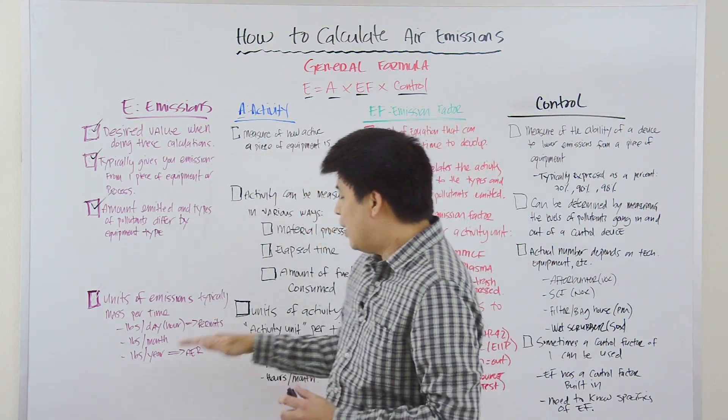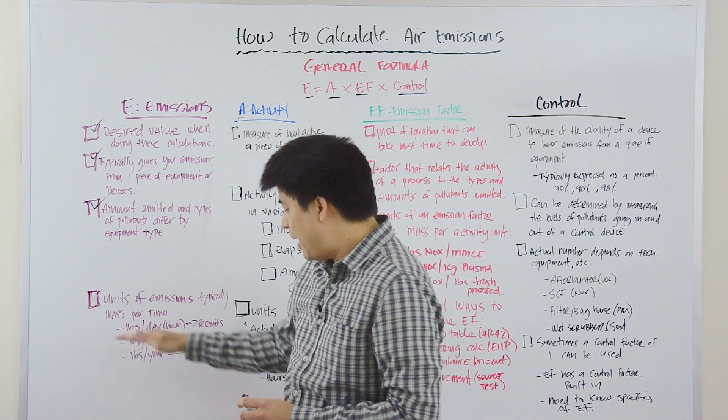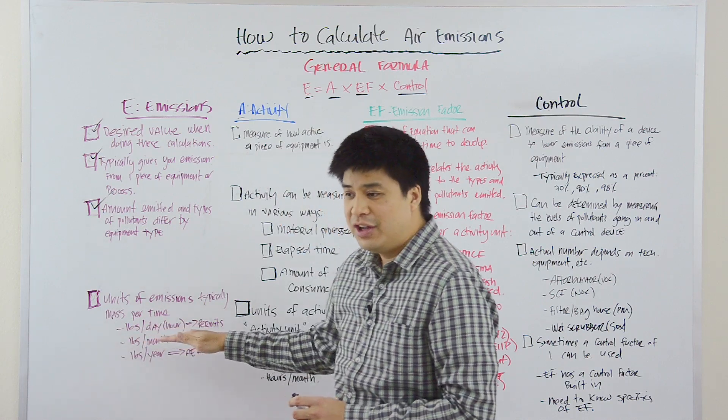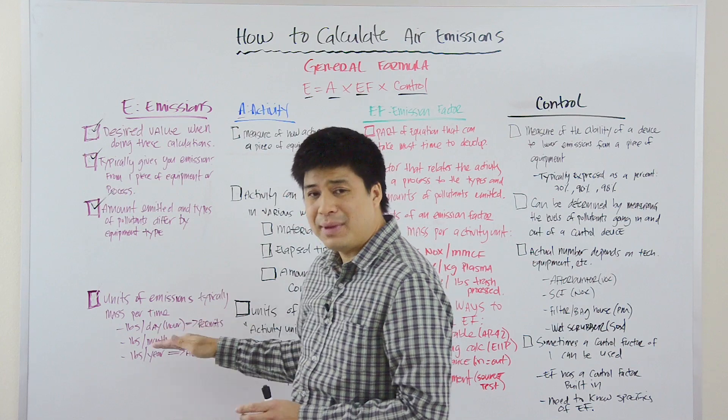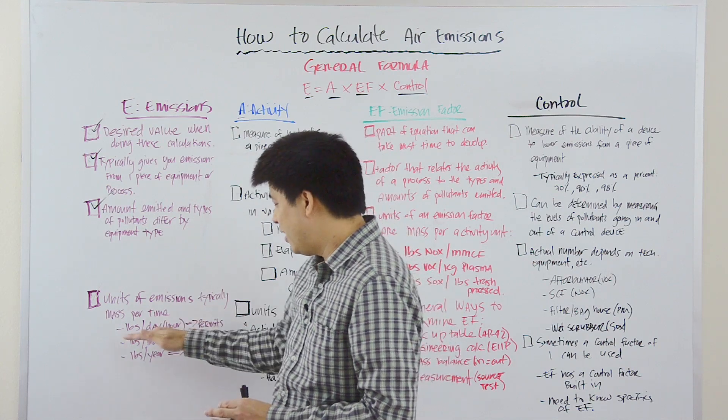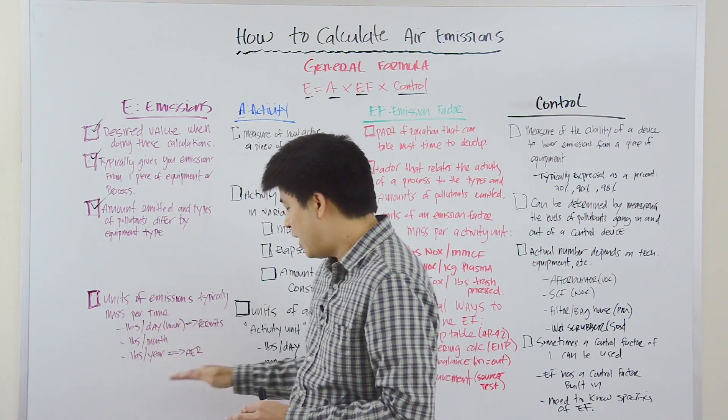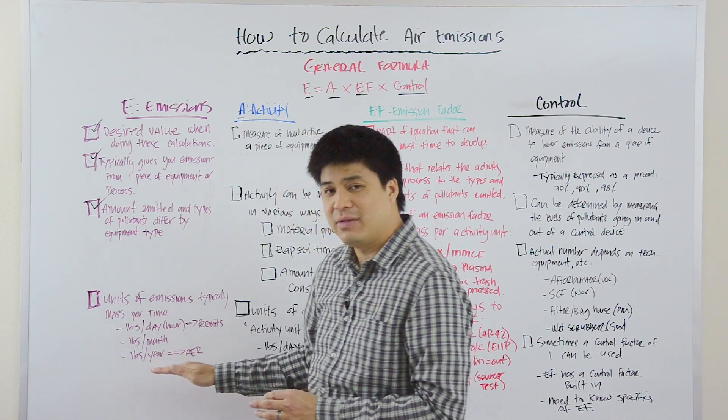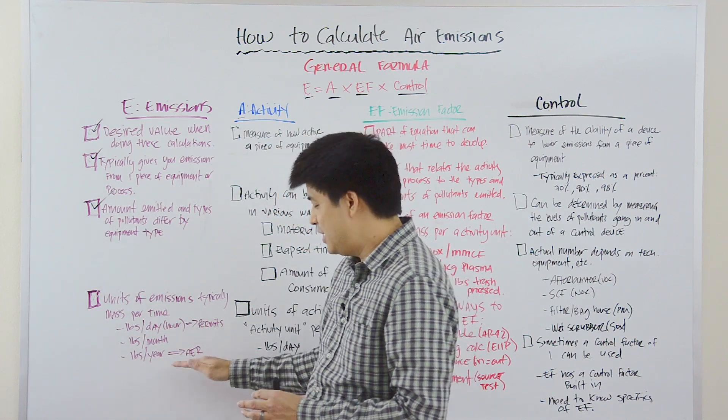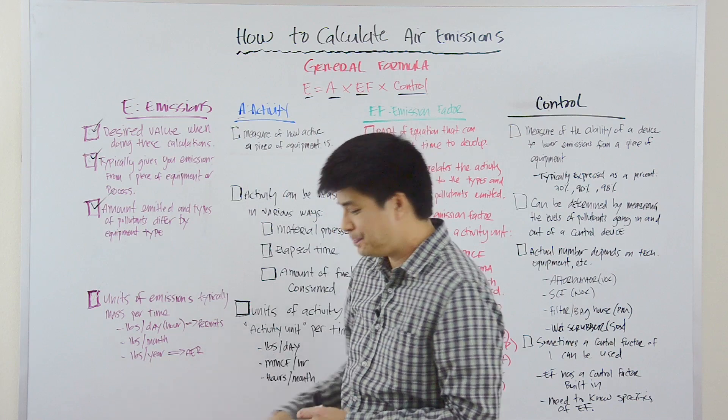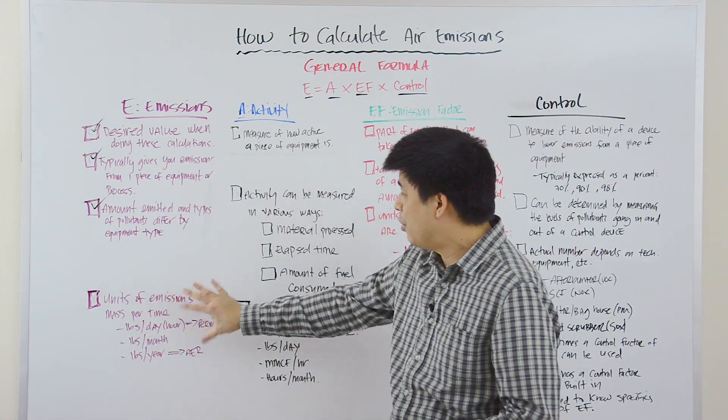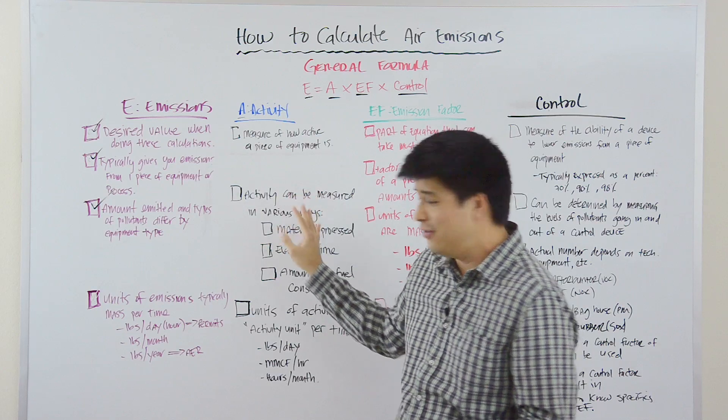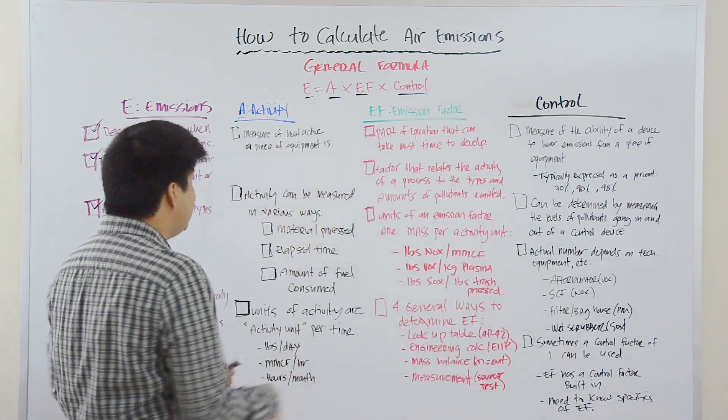But what we typically see is that for pounds per day, pounds per hour, you're typically dealing with permits. And so, permitting and permit applications would require you to calculate pounds per day, pounds per hour. On the other hand, an annual emission report would require you to calculate emissions pounds per year. Now, like we said here, the denominator here is very important because that ties to A or the activity. And so, let's talk about the activity next.